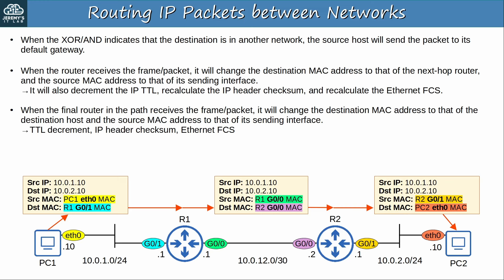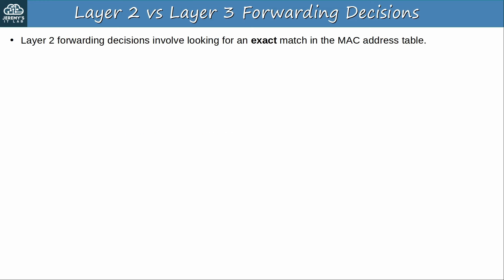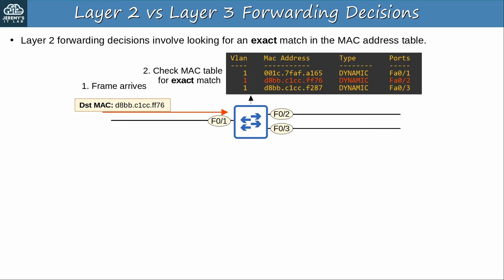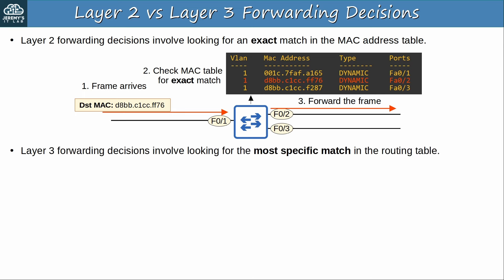There is a major difference in the decision-making processes of layer 2 and layer 3 forwarding. Layer 2 forwarding decisions involve looking for an exact match in the MAC address table. A frame arrives on an interface of a switch, the switch checks the MAC address table for an exact match — partial matches don't count. The entry must match the destination MAC address exactly, and then the switch forwards the frame out of the appropriate interface. However, layer 3 forwarding decisions made by routers involve looking for the most specific match in the routing table, meaning partial matches are okay.